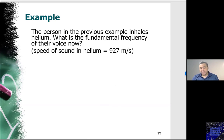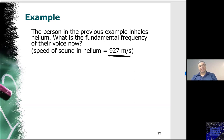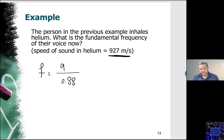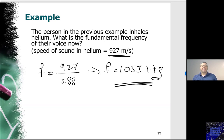In the next example, the same person inhales helium, so the medium is now helium instead of air. The speed of sound in helium is 927 meters per second. The only thing that changes is the speed — the resonator is the same, so lambda is still 0.88 meters. The frequency now becomes 927 divided by 0.88, which equals approximately 1053 hertz. This higher frequency occurs because the speed of sound in helium is higher than in air.